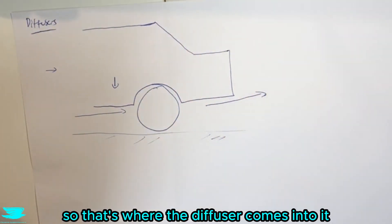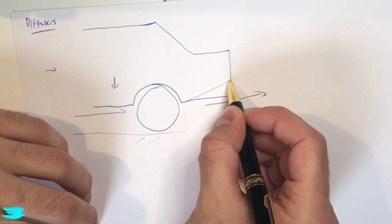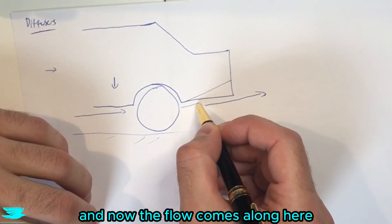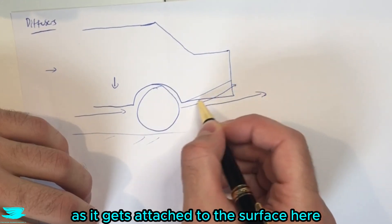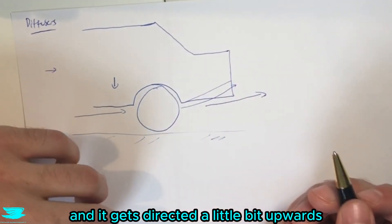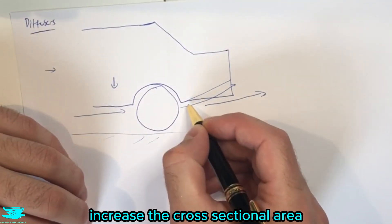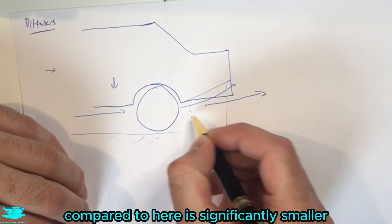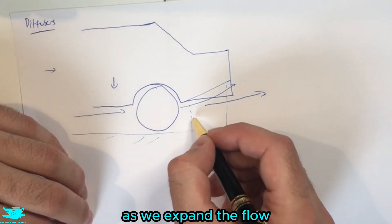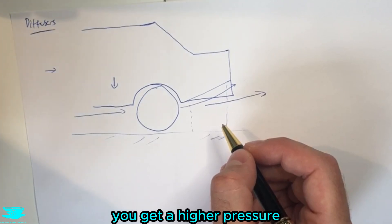So that's where the diffuser comes into it. What we do is we actually chamfer this back part off, and now the flow will come along here and it will start to scoop up a little bit as it gets attached to this surface here and gets directed a little bit upwards. So what the diffuser does is it increases the cross-sectional area, so the cross-sectional area here compared to here is significantly smaller. As we expand the flow the velocity drops and we actually get a higher pressure.